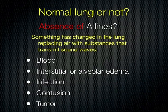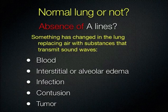When wondering whether you have normal lung, you're looking for: are the A-lines gone? If the A-lines are gone, that means there's not air there — something has replaced the air in the lung. That could be blood, edema, infection, contusion, or tumor. Any number of things can obliterate the A-lines, and then you have to start thinking: what has taken their place?